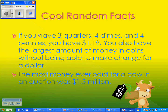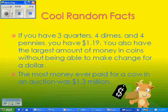If you have 3 quarters, 4 dimes, and 4 pennies, you have $1.19. You also have the largest amount of money in coins without being able to make change for a dollar. The most money ever paid for a cow in an auction was $1.3 million.